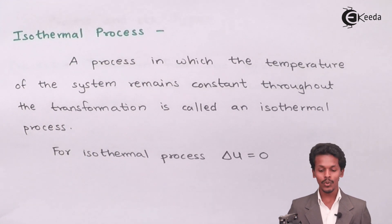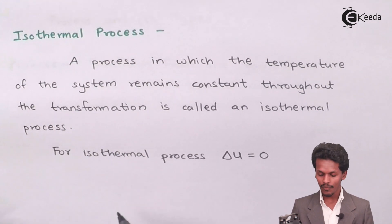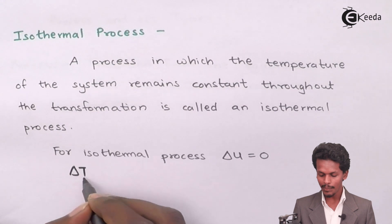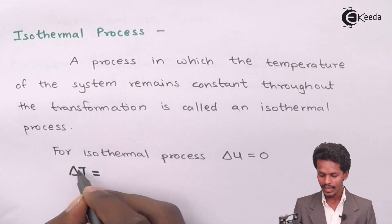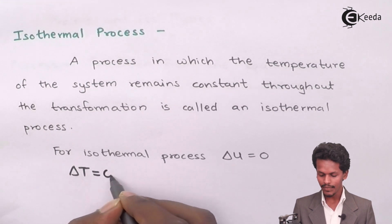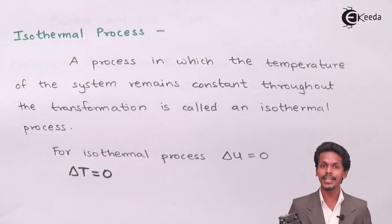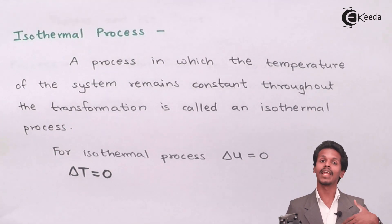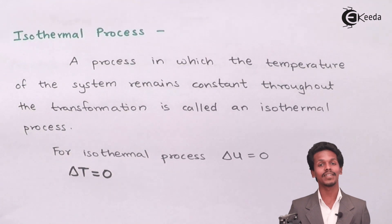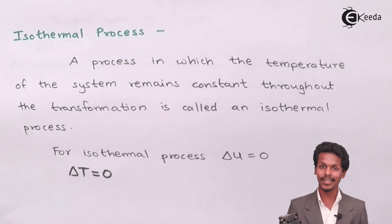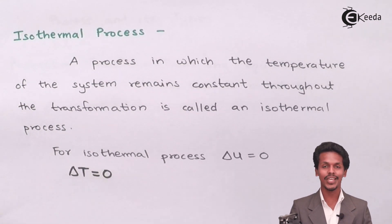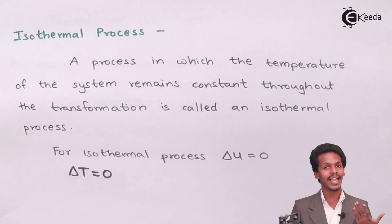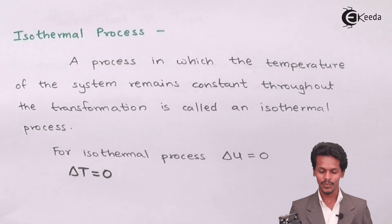Since there is no change in temperature, delta T will also be zero. The initial stage of the system will have a temperature T1, and the final stage will also have the temperature T1 itself. So there is no change in temperature, and hence it is said to be an isothermal process.